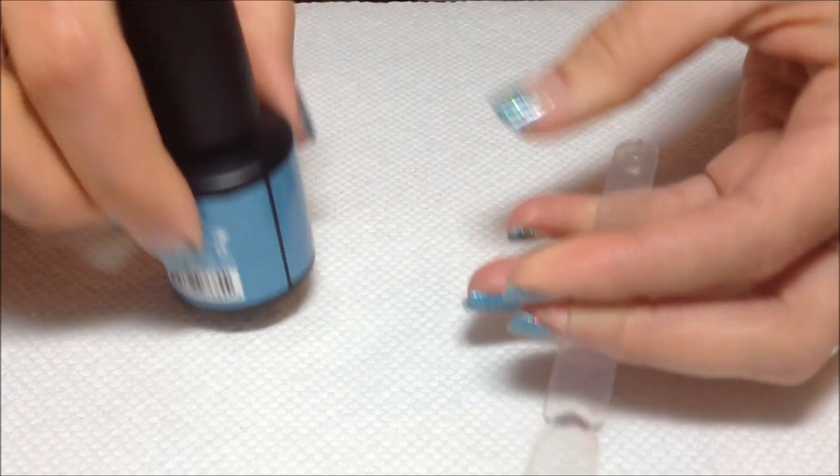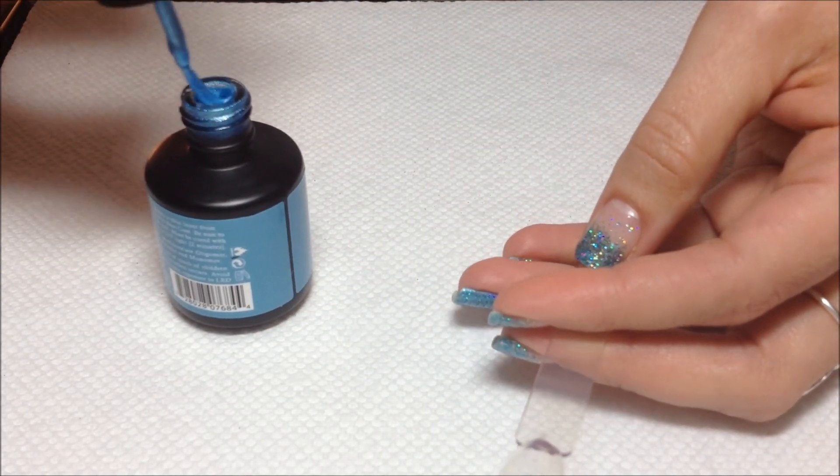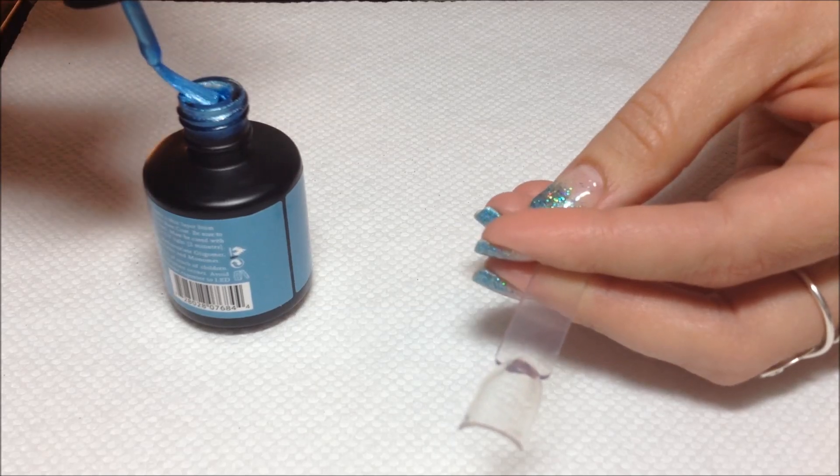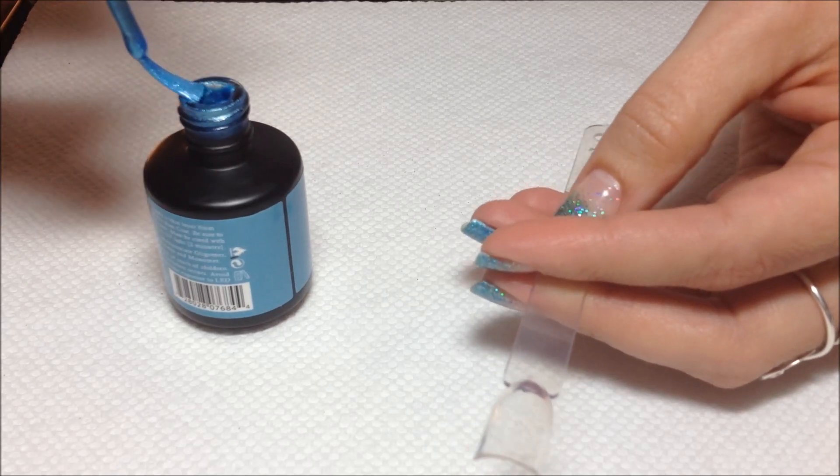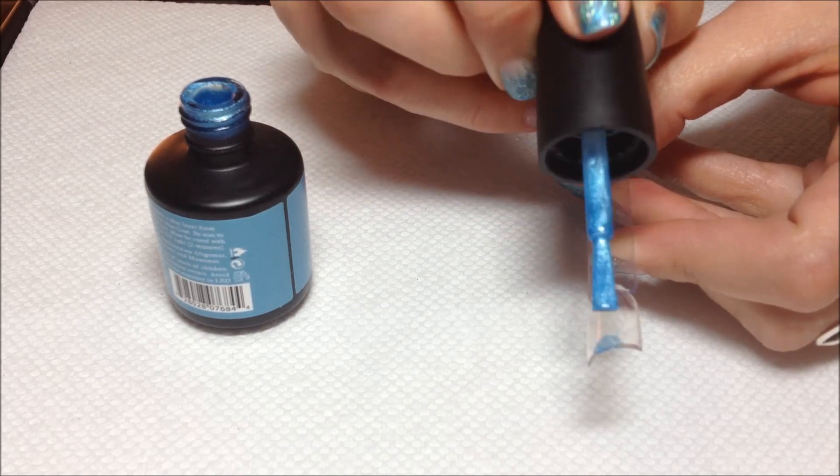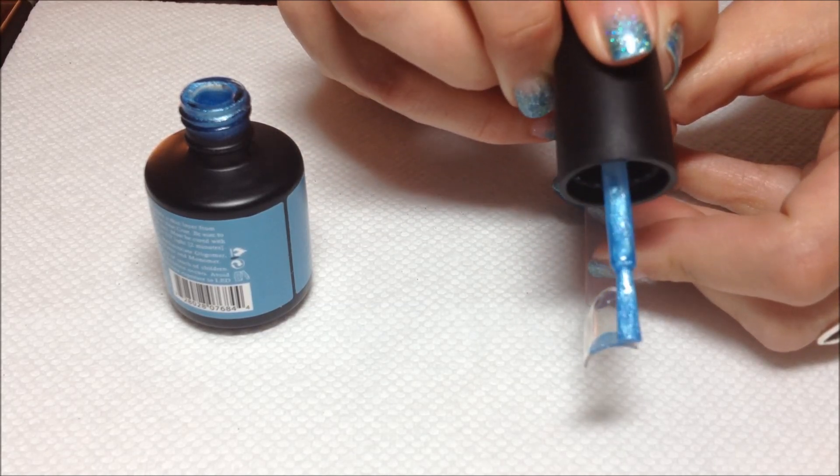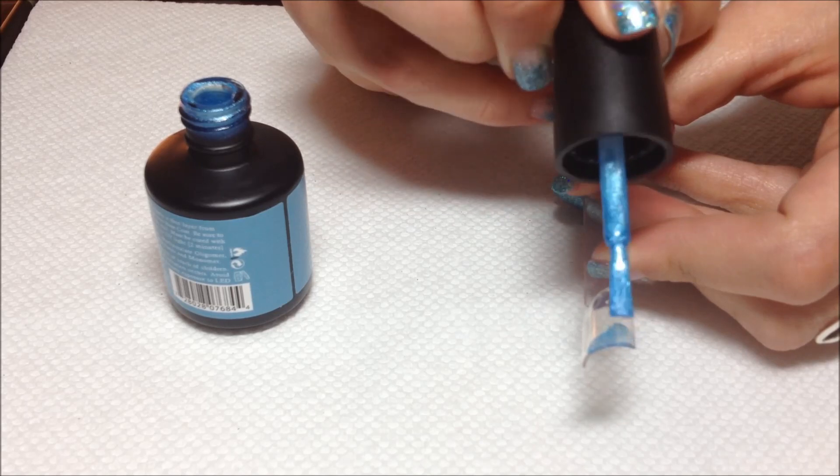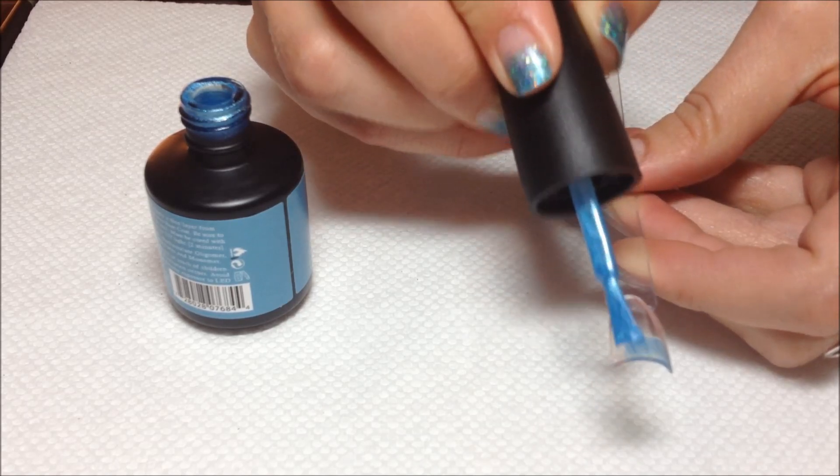So I'm going to apply this blue very gently. I'm going to wipe off most of the polish from my brush and just apply it on the tip. And pull it down so that it has a subtle gradient. It doesn't have to be perfect.